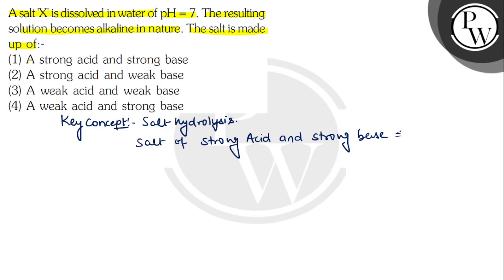Now, the resulting solution becomes alkaline in nature after dissolving the salt. The salt was dissolved in water with pH 7, and the salt made the solution alkaline.